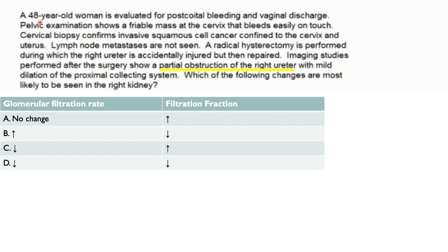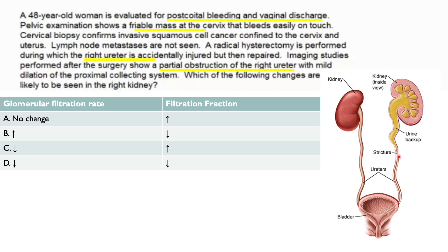A 48-year-old woman is evaluated for post-coital bleeding and vaginal discharge — fibromyomas at the cervix, so she has cervical cancer. They performed a radical hysterectomy. The ureter and uterine artery are very close together, so there's a high risk of ureteral injury during hysterectomy. When repaired, a stricture forms, leading to partial obstruction — urine backs up and causes dilation of the proximal collecting system.